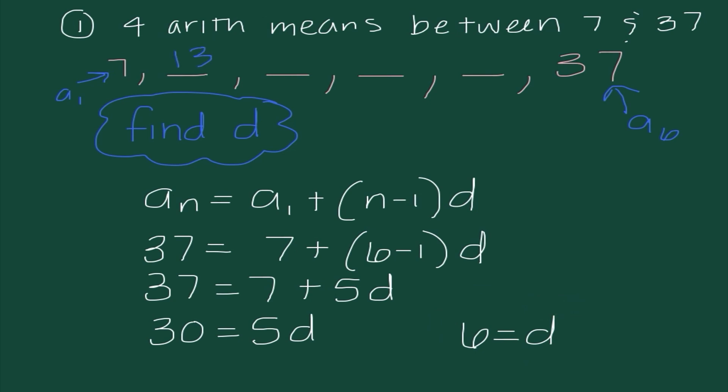So in order to find these four numbers, I know I'm going to have to add 6 to the previous term. So I would say 13, 19, 25, 31. And if I added 6 again, I would get 37. So that tells me that these four numbers are the arithmetic means.